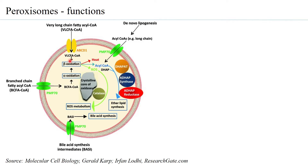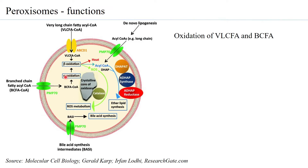One of the major functions of peroxisomes is the oxidation of very long chain fatty acids and branched chain fatty acids. Similar to mitochondria, fatty acids are oxidized here. You can have beta-oxidation for very long chain fatty acyl-CoA, or alpha-oxidation for branched chain fatty acids, giving rise to several different acyl-CoAs. Thus, VLCFA and BCFA are oxidized within the peroxisome.